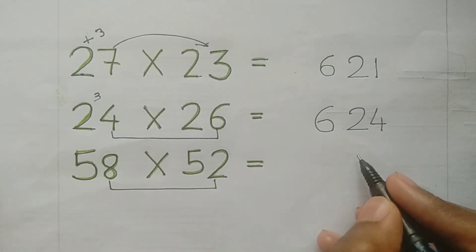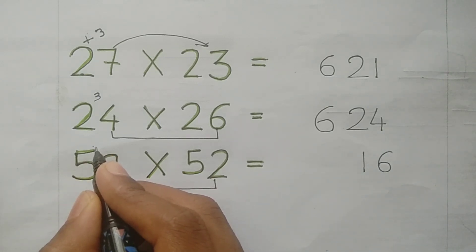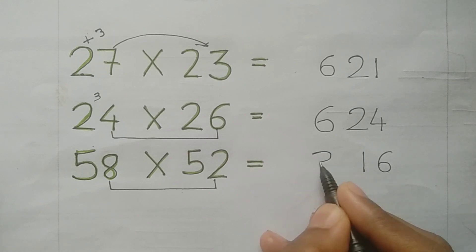Next: 58 into 52. 8 into 2 is 16, write it. Next 5, next number. 5 into 6 is 30, 3016 answer.